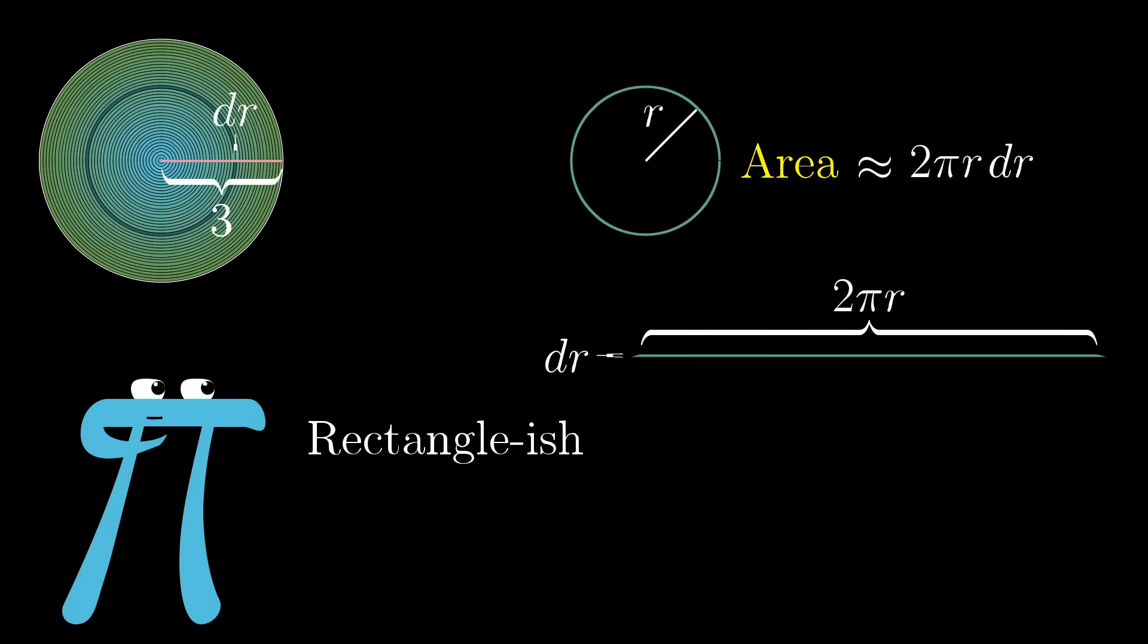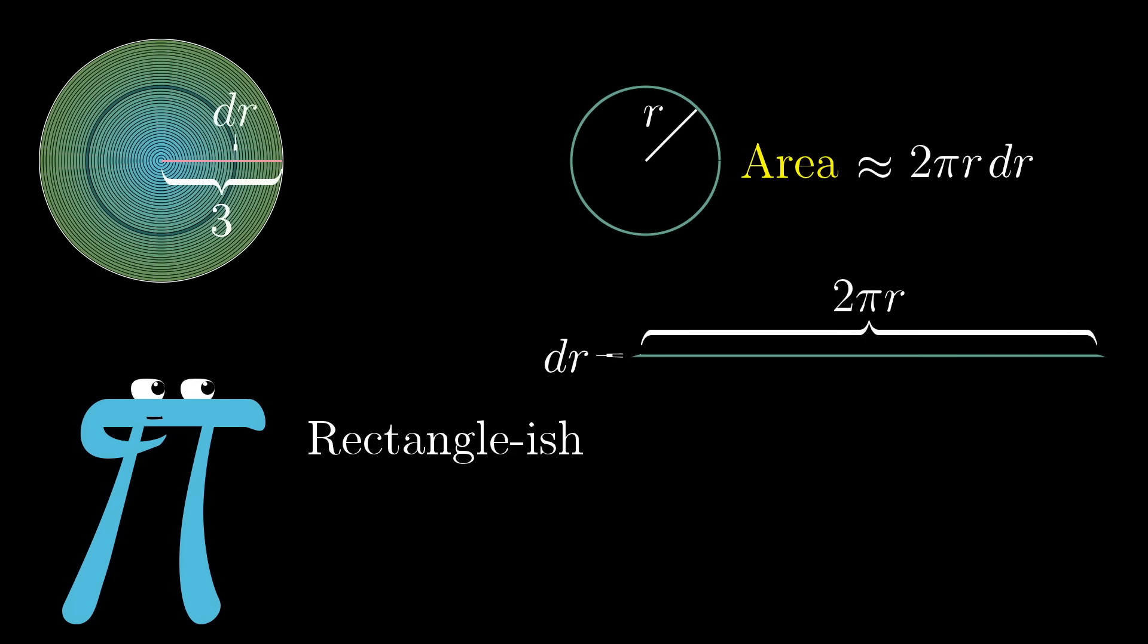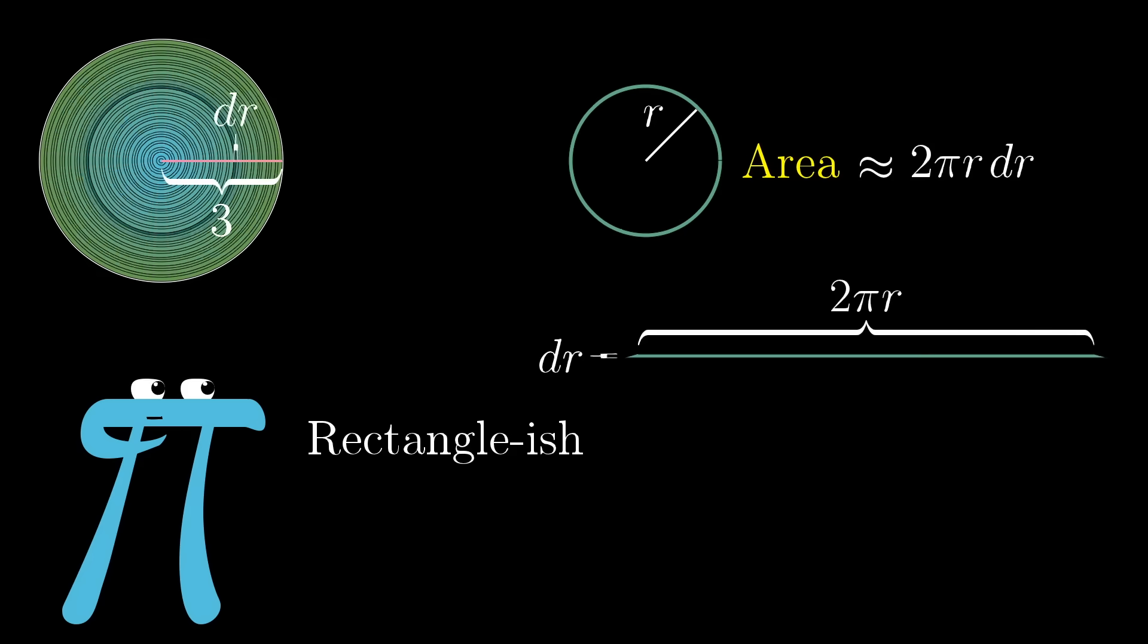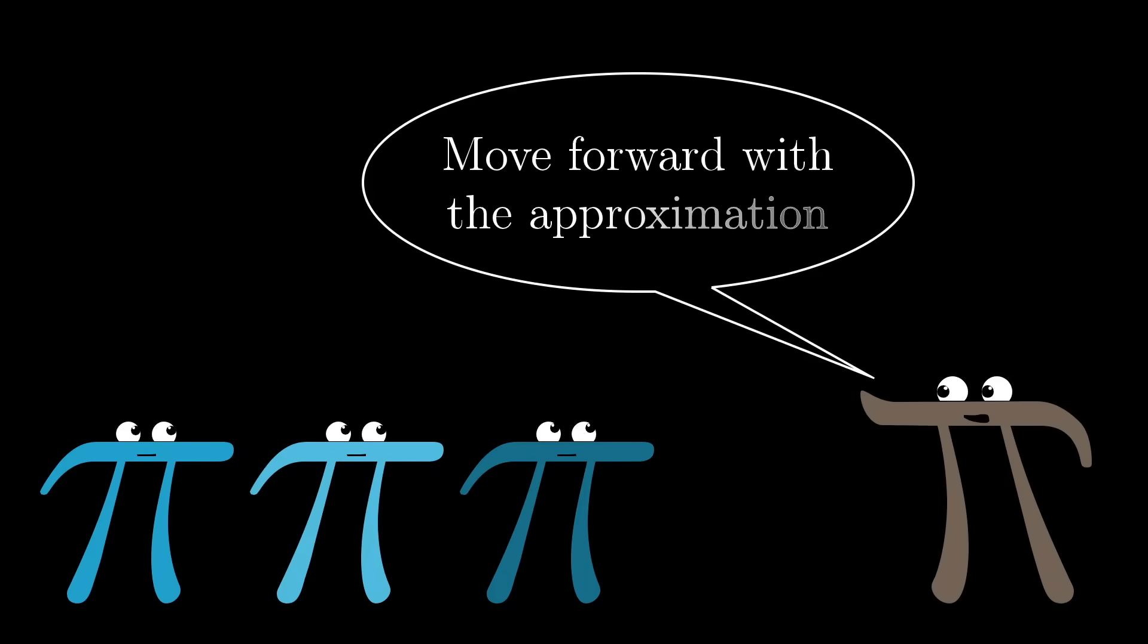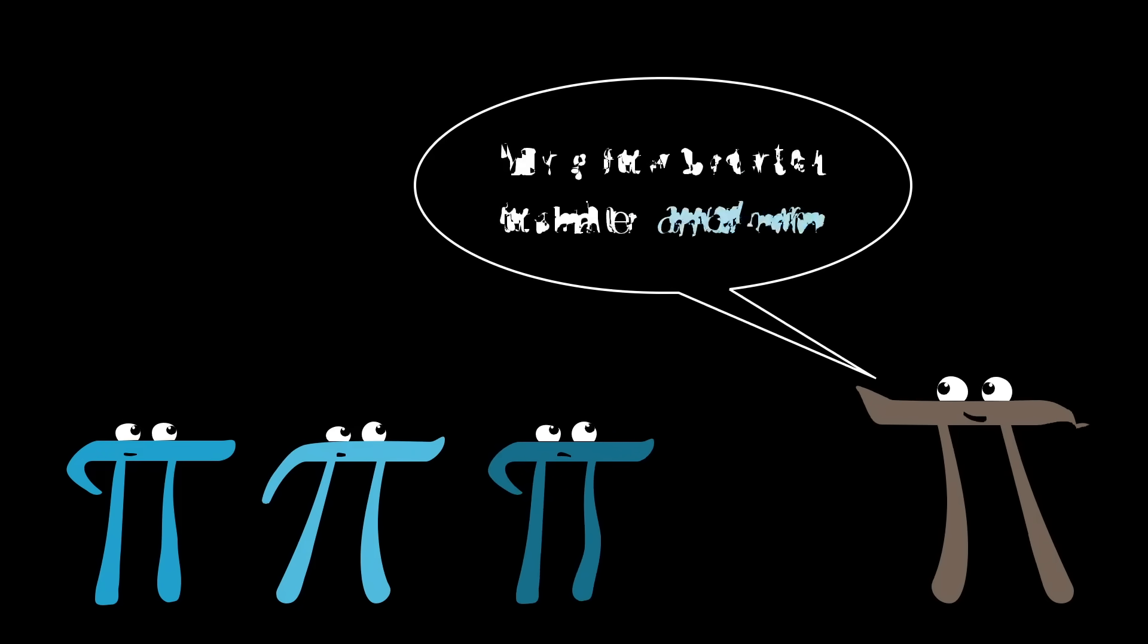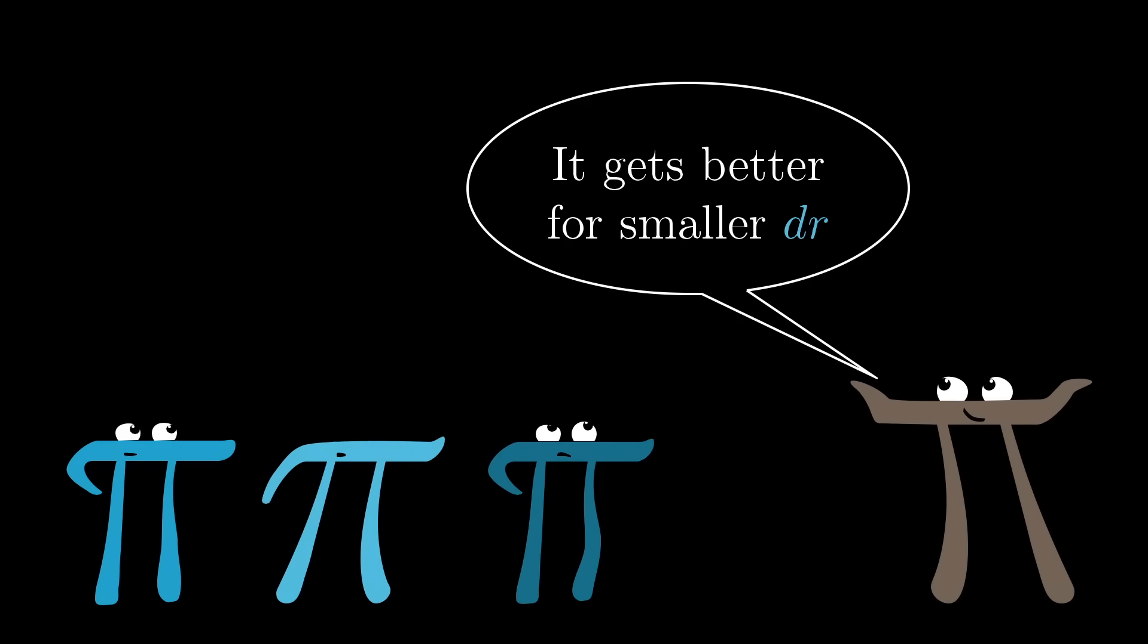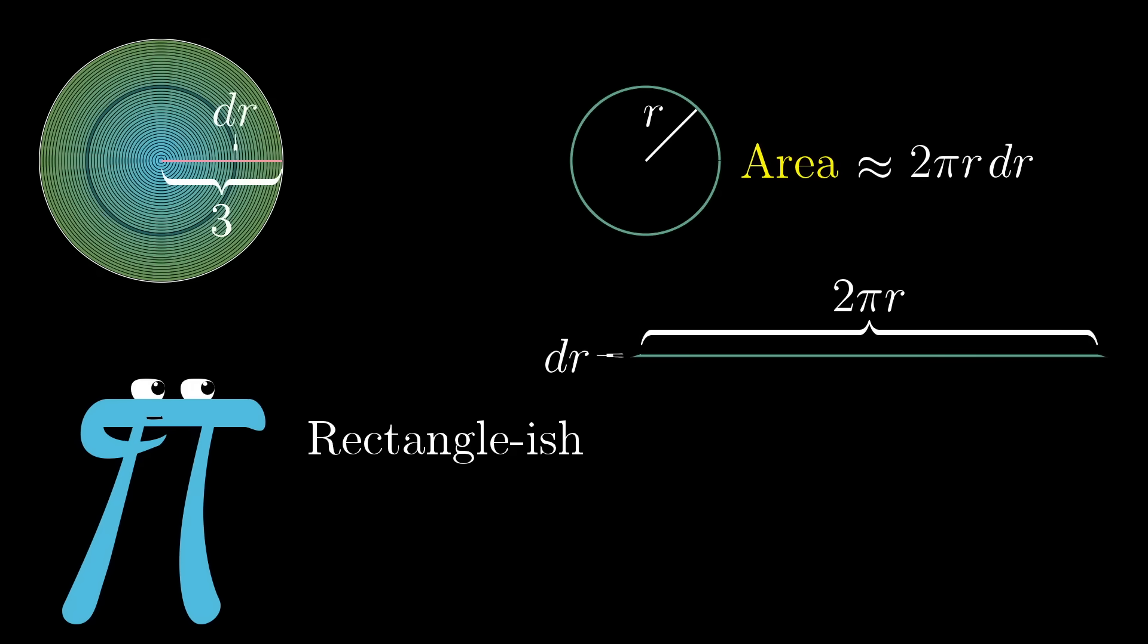And even though that's not perfect, for smaller and smaller choices of dr, this is actually going to be a better and better approximation for that area, since the top and the bottom sides of this shape are going to get closer and closer to being exactly the same length. So let's just move forward with this approximation, keeping in the back of our minds that it's slightly wrong, but it's going to become more accurate for smaller and smaller choices of dr. That is, if we slice up the circle into thinner and thinner rings.